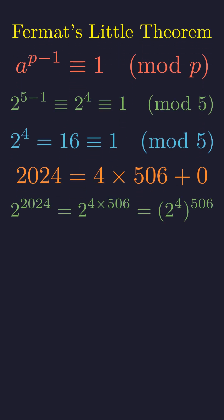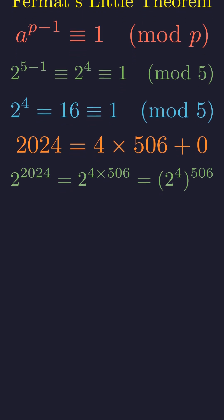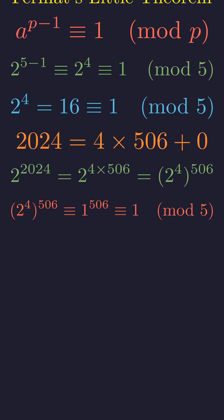This means we can rewrite our expression as 2 to the 4th, all raised to the 506th power. But we know 2 to the 4th is 1 modulo 5, so this entire expression becomes 1 to the 506th power, which is simply 1.